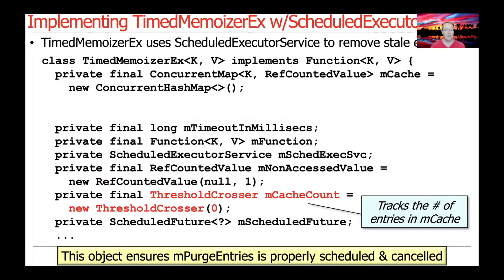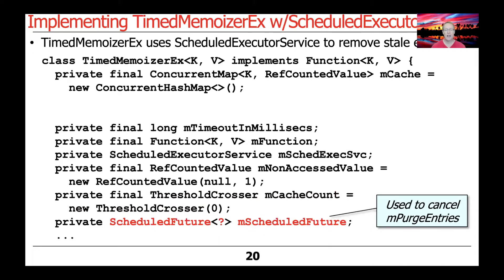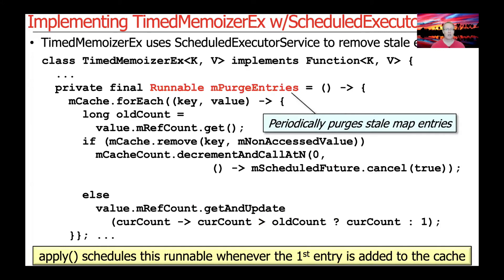Here's where things diverge. We have a couple more fields. One is mCacheCount, an instance of a class called ThresholdCrosser, which tracks the number of entries in the cache. We need this to ensure that mPurgeEntries is properly scheduled and canceled. We also have a ScheduledFuture field used to cancel mPurgeEntries when no more key-value pairs are registered in the ConcurrentHashMap. The final field is the one and only runnable, mPurgeEntries, used to periodically purge all stale map entries.